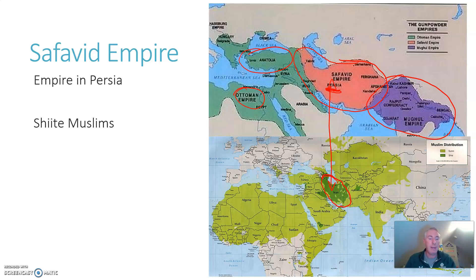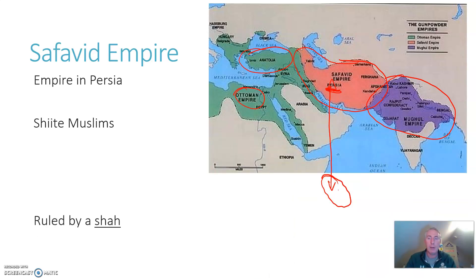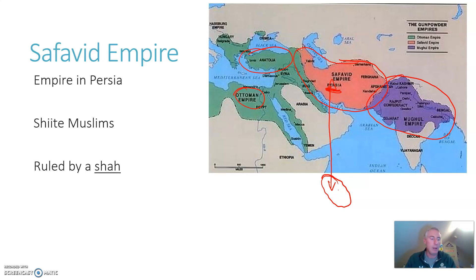The Safavids established Shiism as the dominant form of Islam in their empire. The Safavid Empire was not ruled by a caliph or a sultan, but rather a Shah — a Safavid term for king. This title would be used by rulers in Iran until the late 20th century; right up until 1979, the ruler of Iran was known as the Shah.